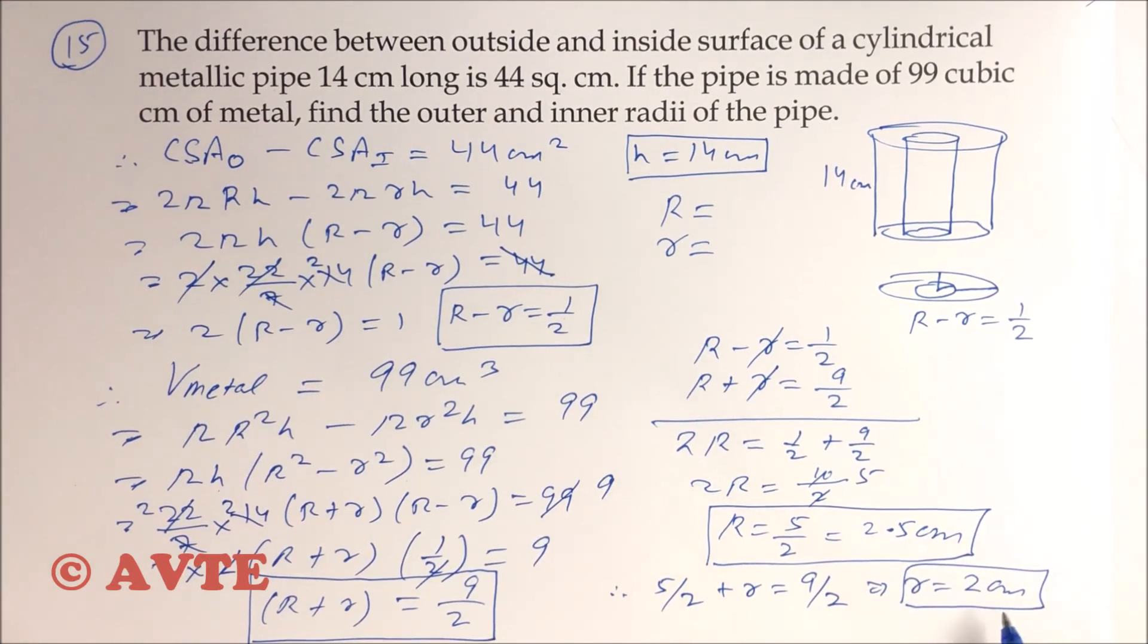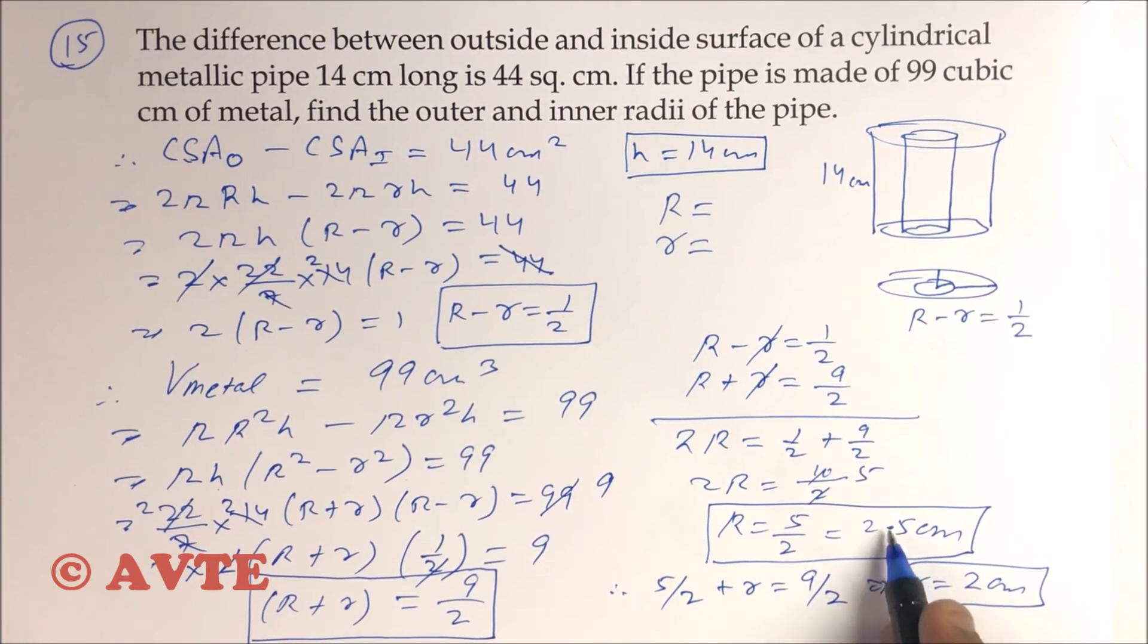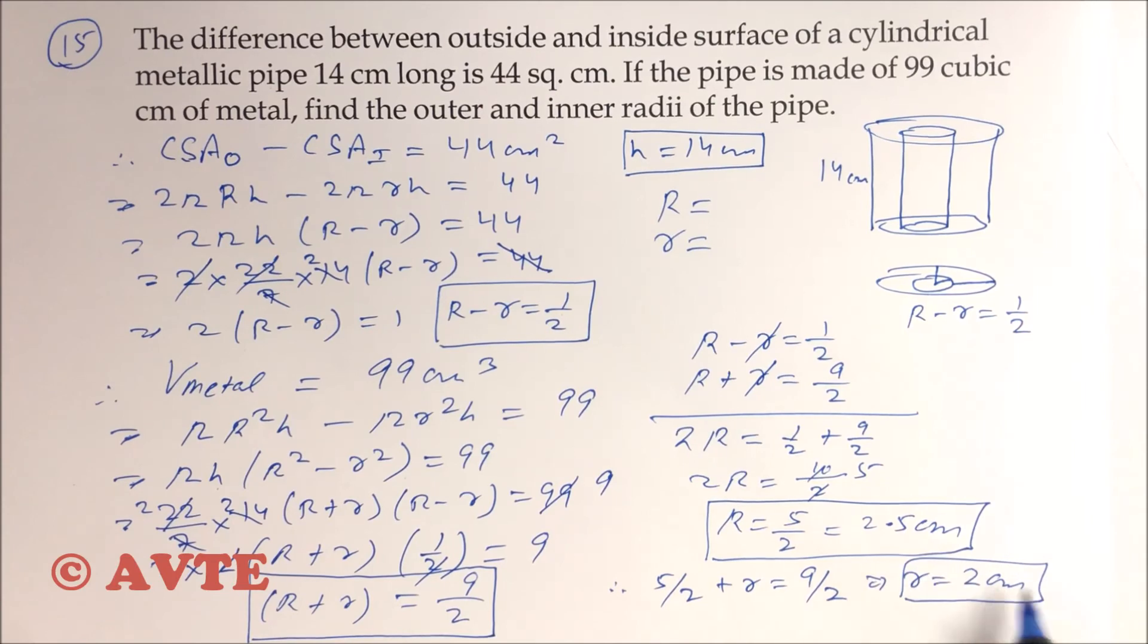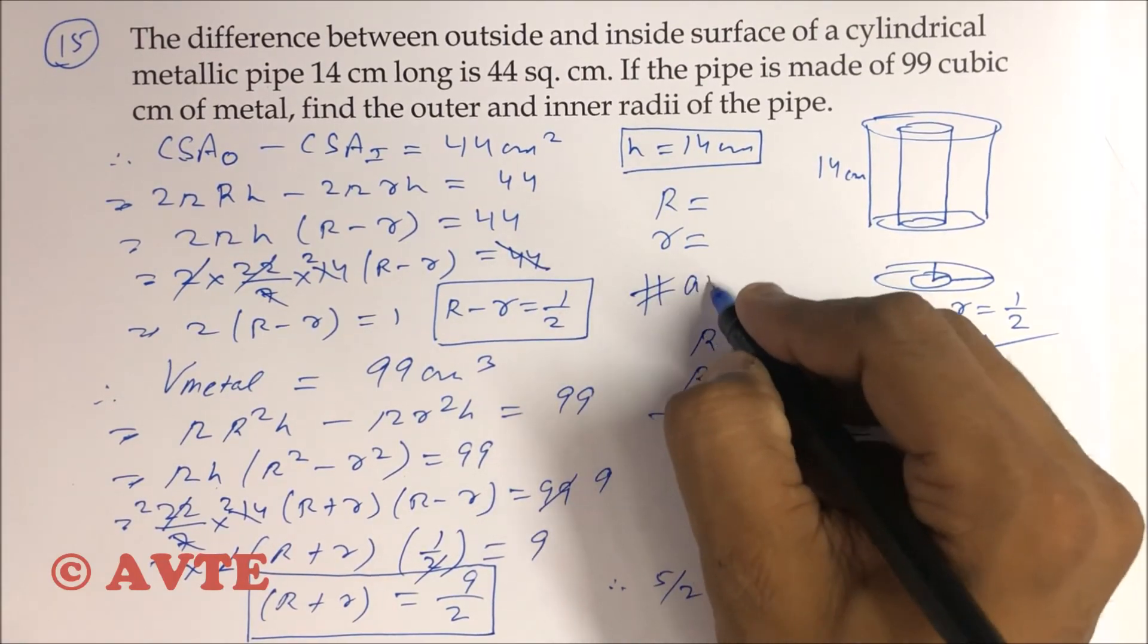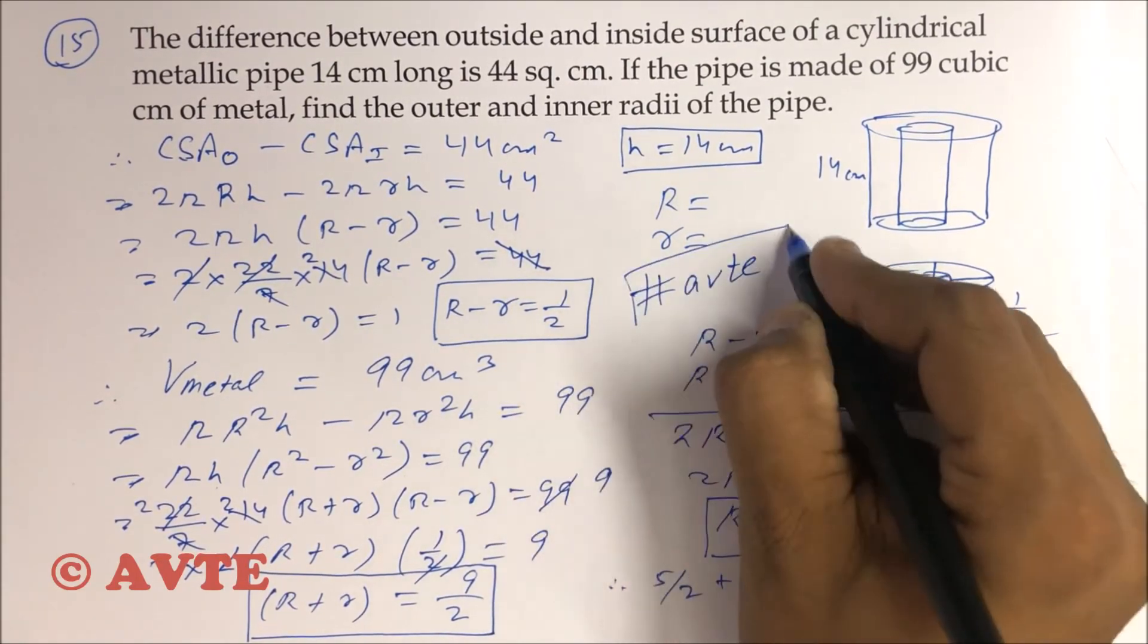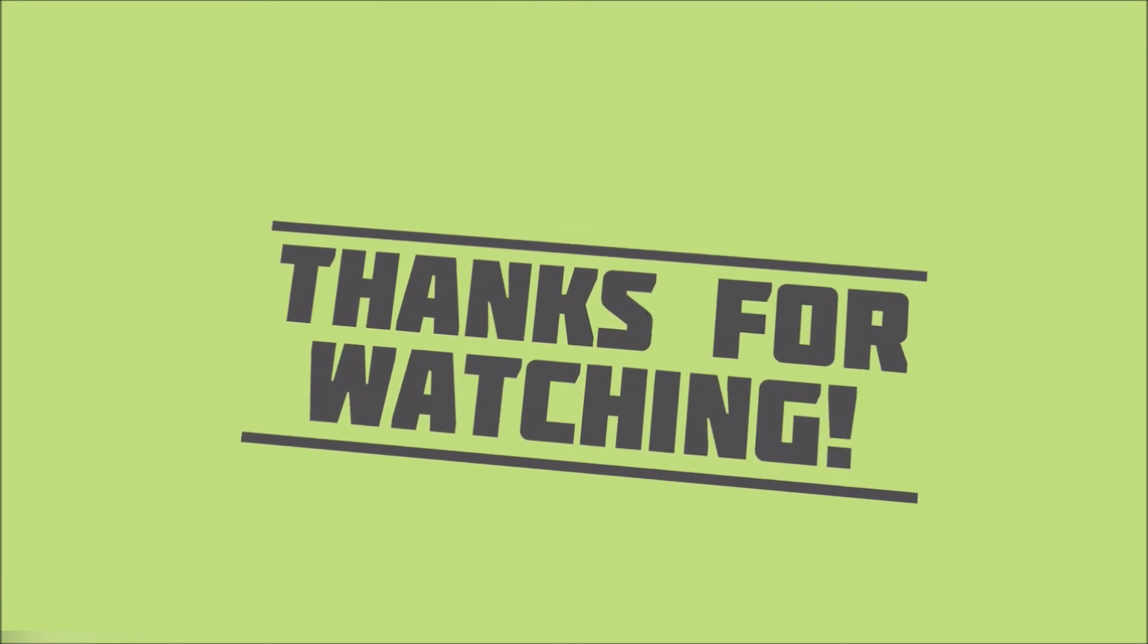So your big R is 2.5 and small r is 2, which means your thickness is 0.5, that is 1/2. This is a very good question categorized as HOTS. If you like this video just thumbs up and keep watching our channel AVTE.